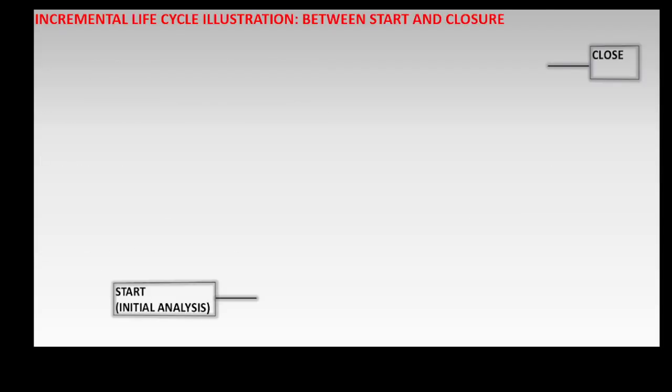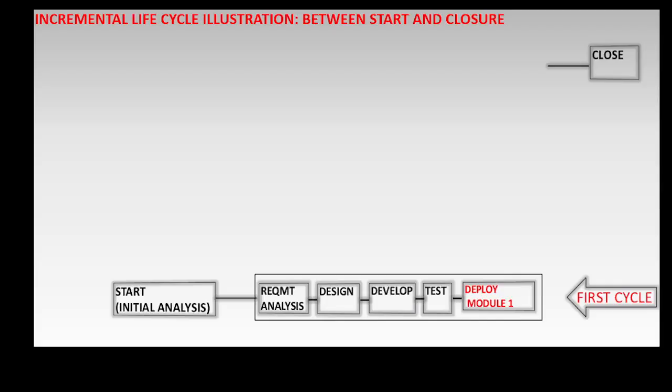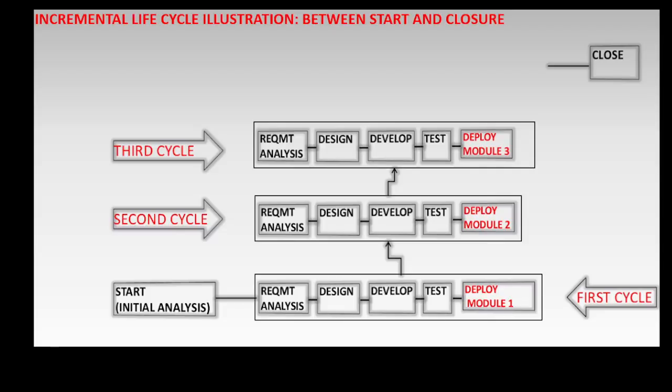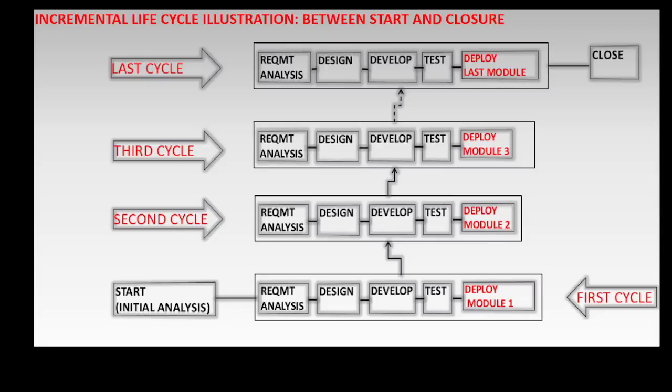From this diagram, between the start and close of the project, in the first cycle, the first module is created and deployed. In the second cycle, the second module is created and deployed. Likewise, in the third cycle, the third module is created and deployed. The phases are repeated in subsequent cycles up to the last cycle, when the last module or increment is created and deployed.